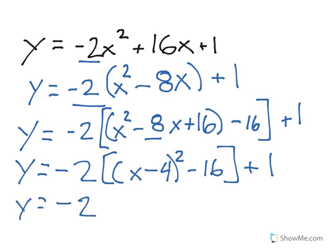In order to get rid of these square brackets, I'm going to have to multiply it back out, negative 2 times negative 16. So that's going to be plus 32, then plus 1 at the end. Again, because I'm moving the negative 16 out of the bracket, I have to multiply it by that leading coefficient.